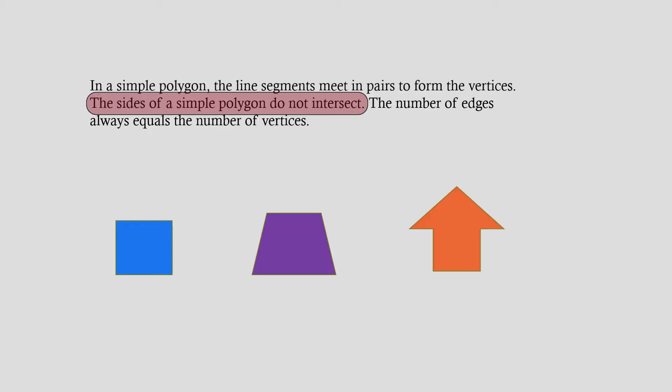In a simple polygon, the line segments meet in pairs to form the vertices. The sides of a simple polygon do not intersect. The number of edges always equals the number of vertices.